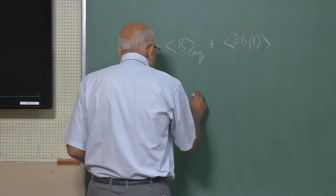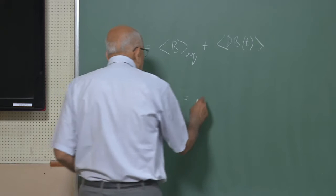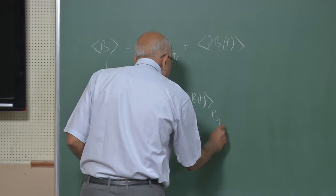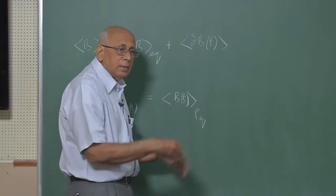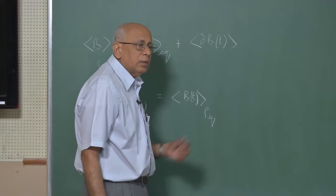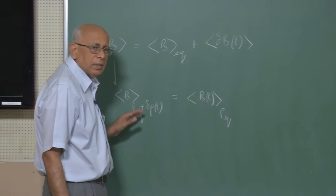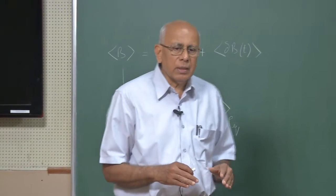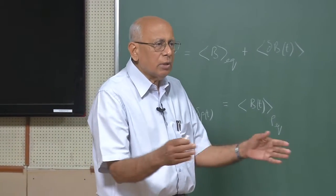But you could equally well have done this by working in a more active picture — in other words, by working in terms of B of T itself in terms of rho equilibrium. This means going to the Heisenberg picture with the full time-dependent Hamiltonian, correct to first order, and then computing averages with respect to rho equilibrium. What I would like to do is make contact with what you would be more familiar with in normal quantum mechanics, and then we will put in the thermal fluctuations and average over things.